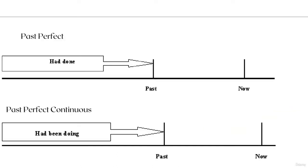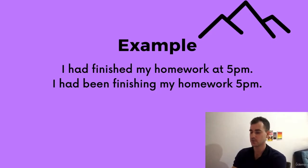Here's a picture of the past perfect. There's the point in the past. Before the point in the past, it's something that we had done — it's done, it's finished. Past perfect continuous: we have the point in the past, and then we have something we had been doing, which was happening continuously — it may still be happening.